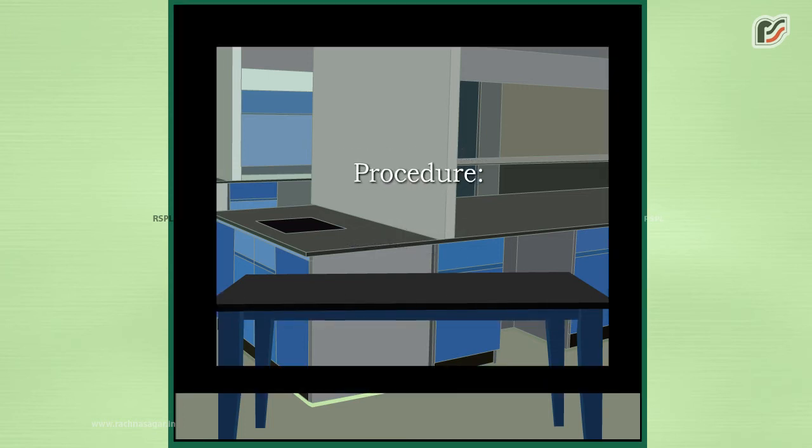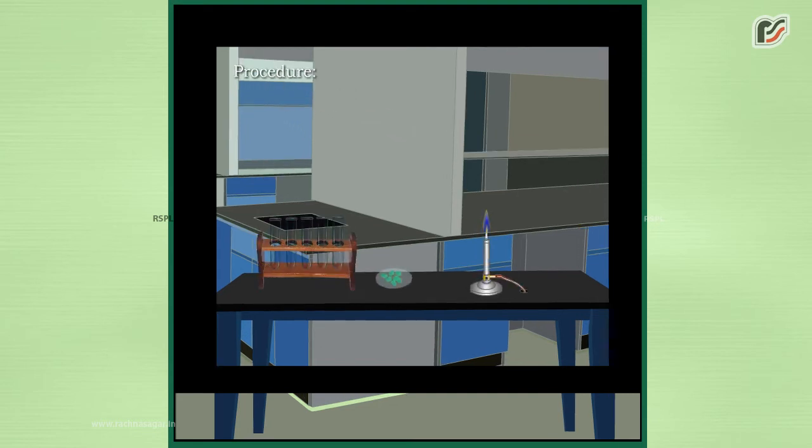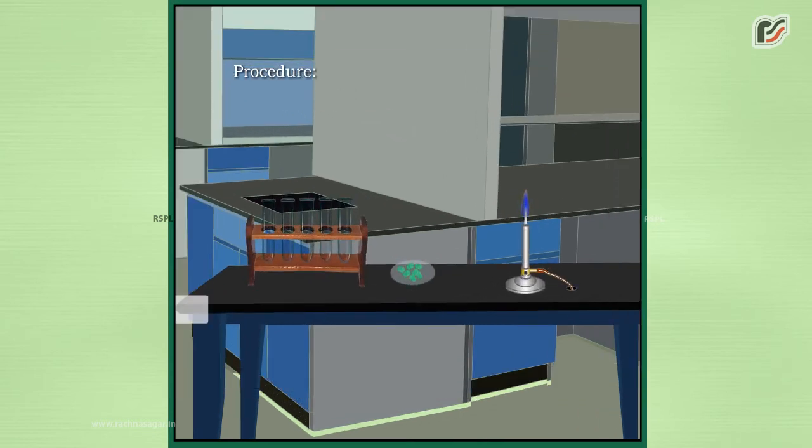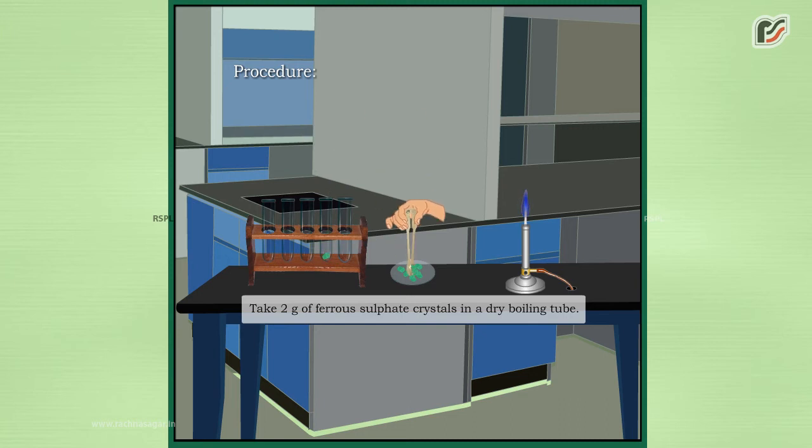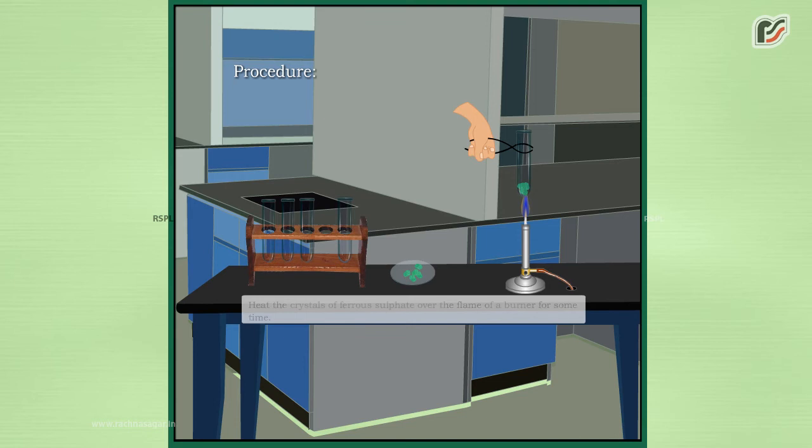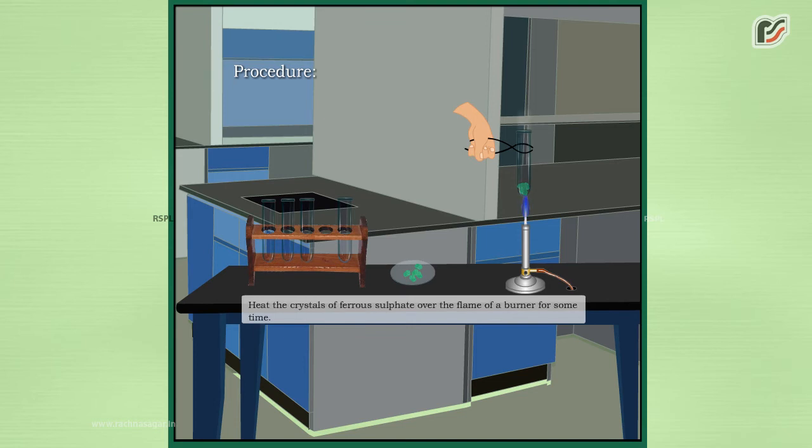Procedure: Take 2 grams of ferrous sulphate crystals in a dry boiling tube. Observe the colour of ferrous sulphate crystals. Heat the crystals of ferrous sulphate over the flame of a burner for some time.